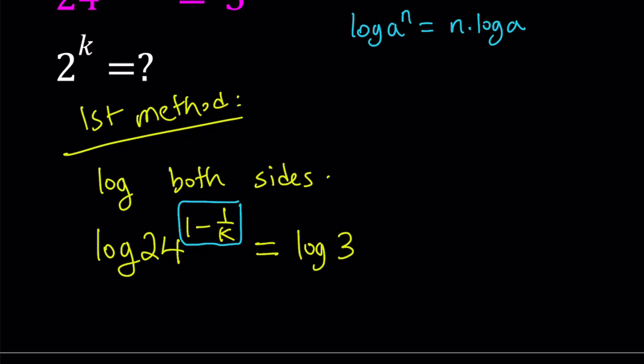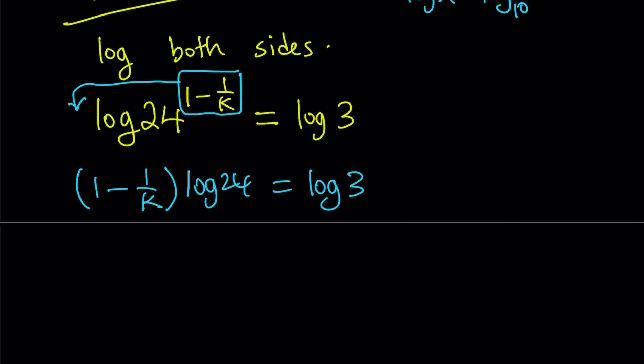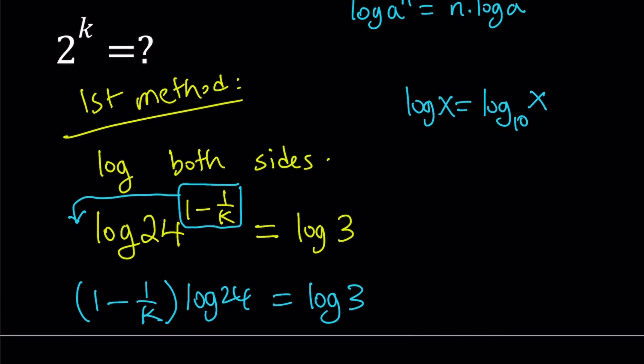Okay, great. So now we can move the 1 minus 1 over k to the front, and that is going to become (1 - 1/k). Let's put that in parentheses. Multiply by log 24 equals log 3. Okay, these are base 10, by the way. I'm not writing it down. But when I write log x, it means base 10. All right? Hopefully that makes sense. So now, obviously, it would make sense. Now, we're trying to look for what would make sense, right?